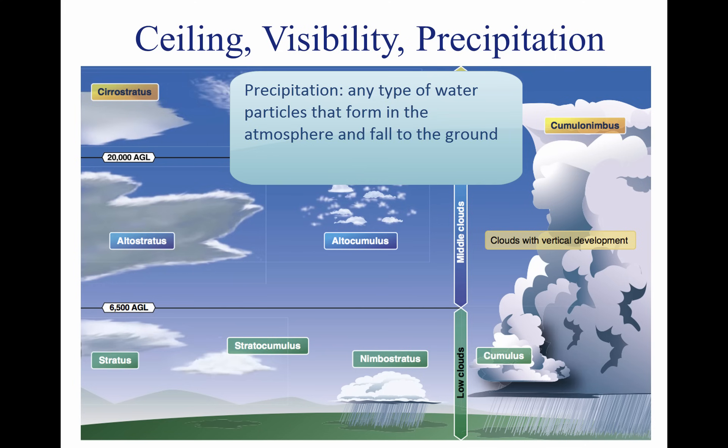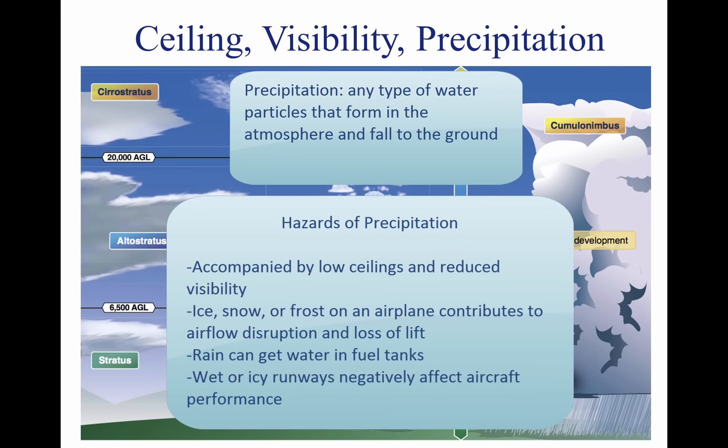Precipitation can occur in several forms as it falls toward the Earth, including drizzle, rain, ice pellets, hail, snow, and ice. Precipitation in any form poses a threat to safety of flight. Often, precipitation is accompanied by low ceilings and reduced visibility.